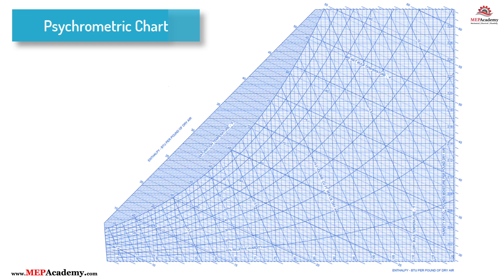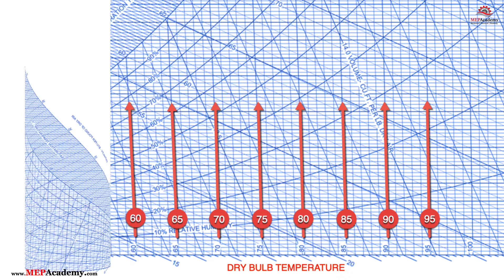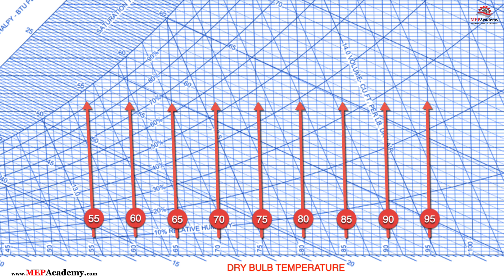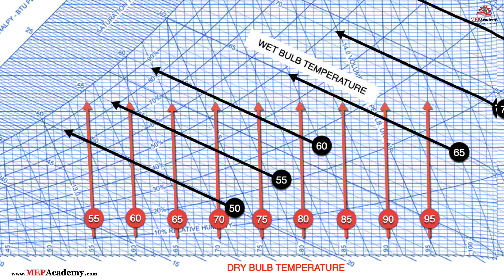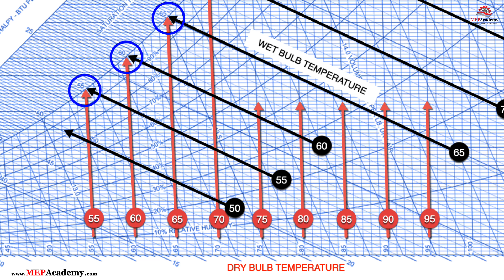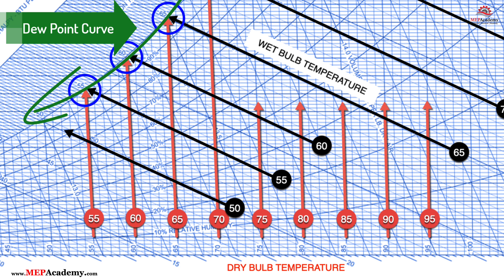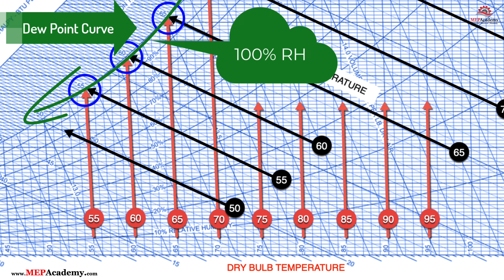On a psychrometric chart, the dry bulb and wet bulb temperatures are key variables. These values help us understand how much moisture the air contains and how it affects heating, cooling, and dehumidification. The dew point is directly related to both temperature and humidity. The dry bulb temperature runs vertically up from the bottom, while the wet bulb temperature runs diagonally. When the dry bulb and wet bulb temperatures are the same, the air is completely saturated and they meet at the dew point line on the chart.